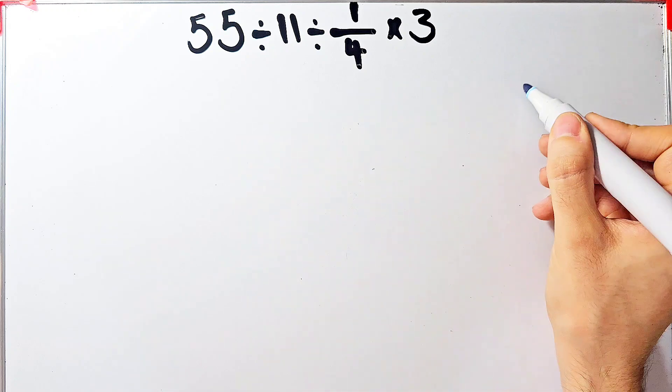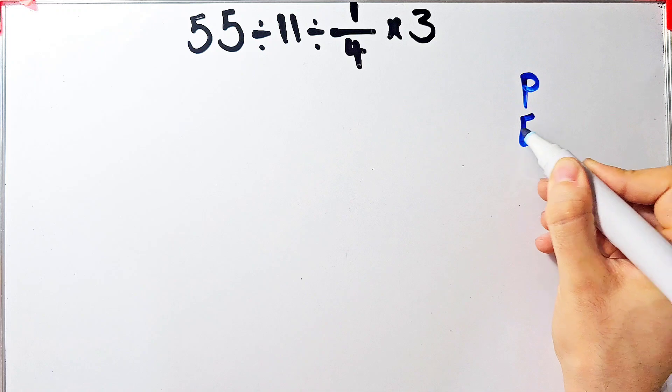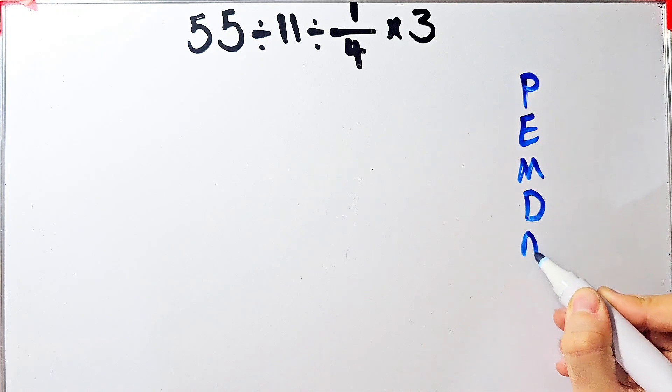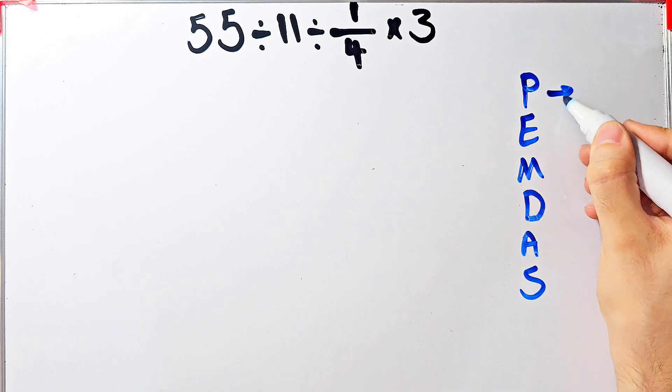Can you solve it? To solve this question we need to follow the order of operations, which is PEMDAS. PEMDAS shows the priority of the mathematical operations. In this rule, P stands for parentheses, E stands for exponent.